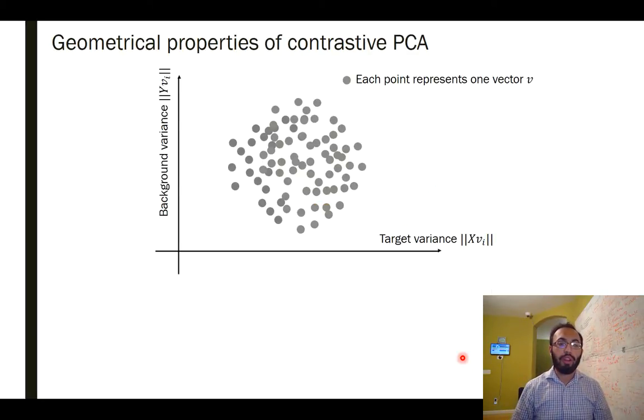Let me talk about certain theoretical properties, actually geometrical properties of contrastive PCA. This is something that's actually quite interesting. Now, unlike PCA, where there's a very clear objective, there's a single objective, and that is let me try to identify the vector or vectors that have the highest variance.